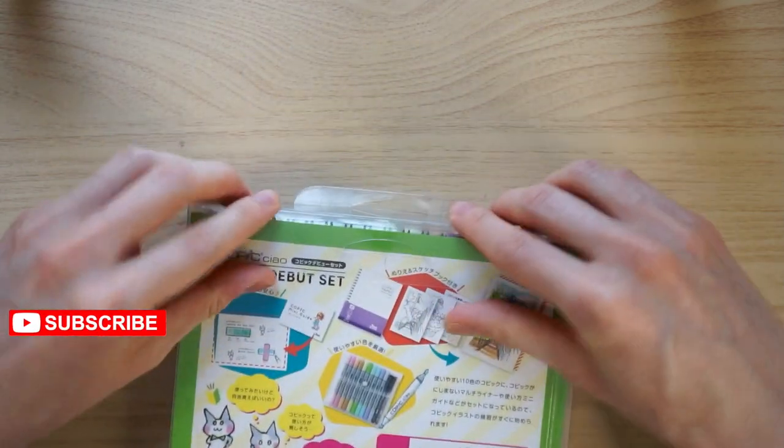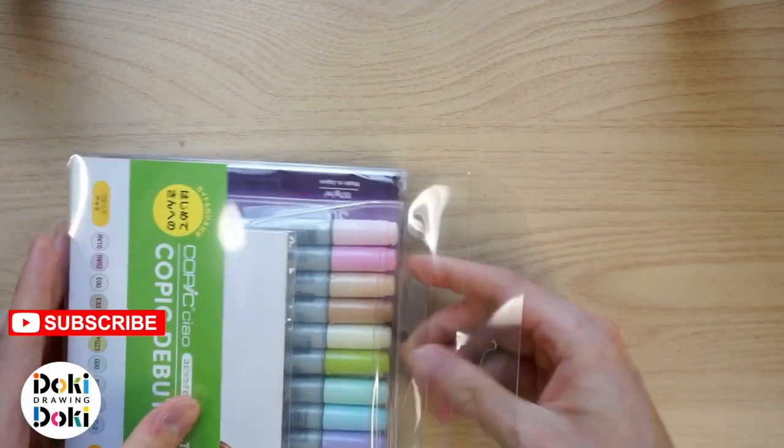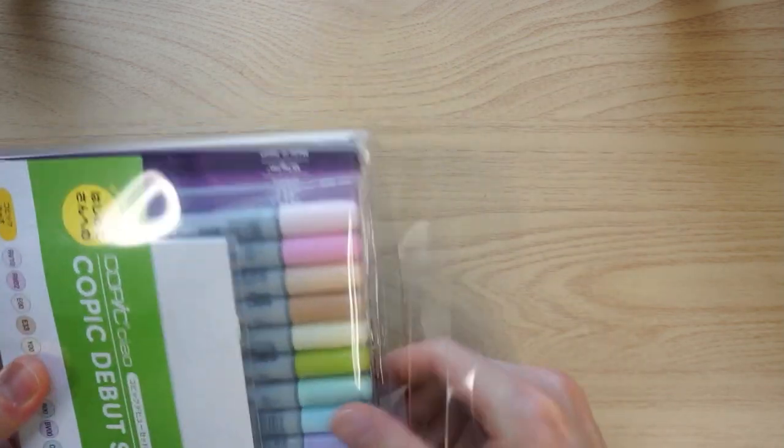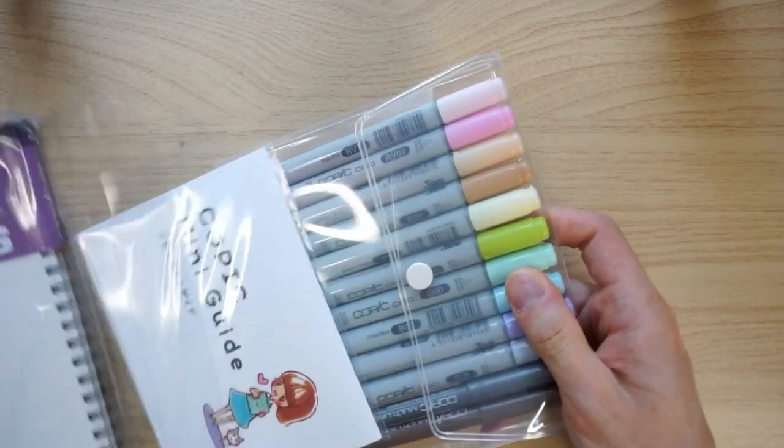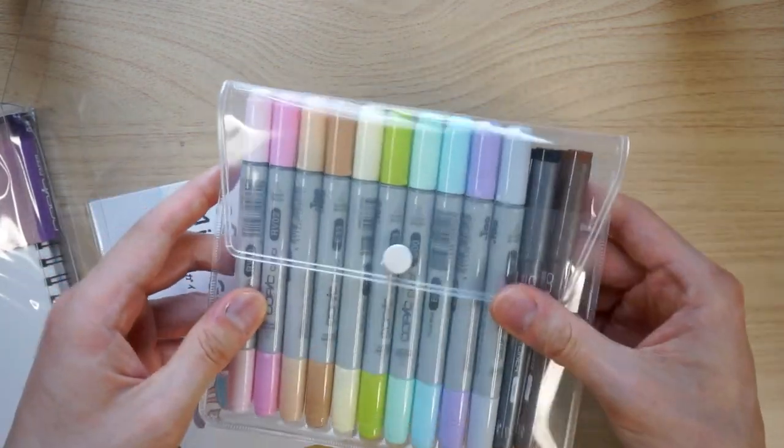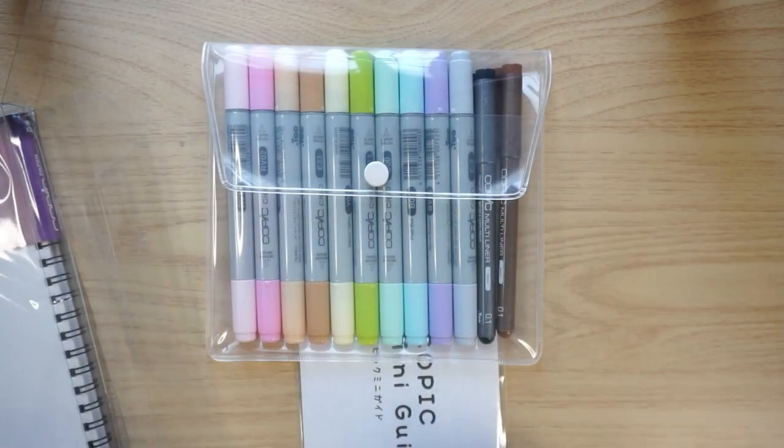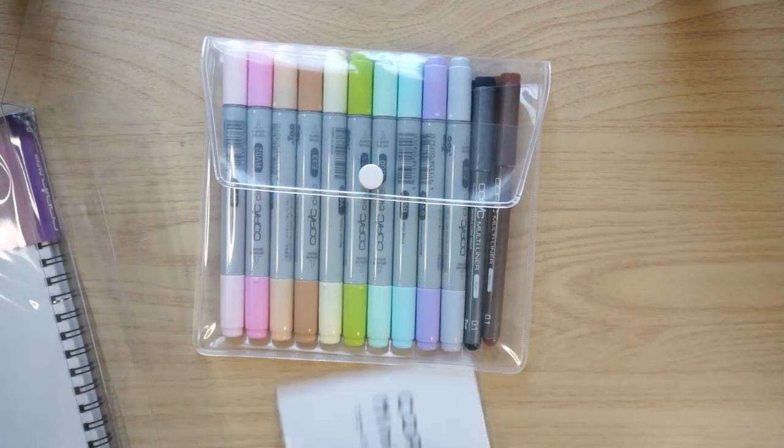It looks like there's a little flap here on the back. We can take this out. And on the inside, not only is the packaging on the outside for the whole set, but on the inside, there's also packaging to keep these markers nice and safe and not rolling around all over the floor.